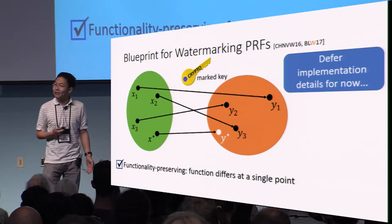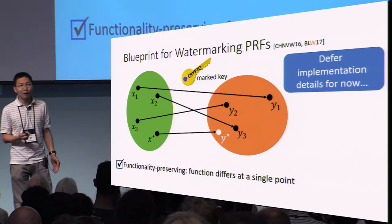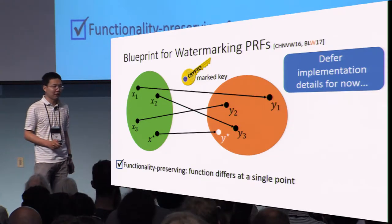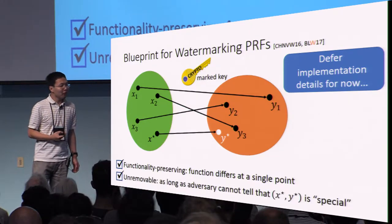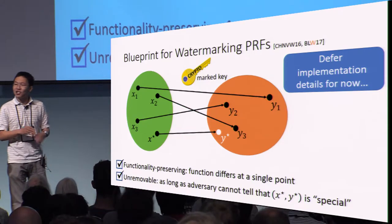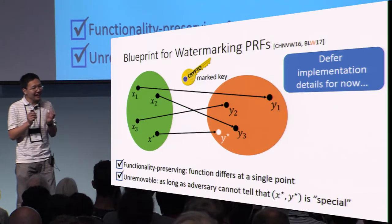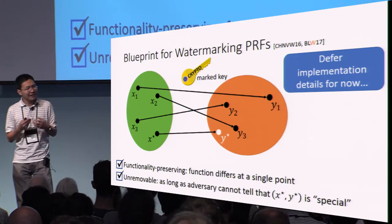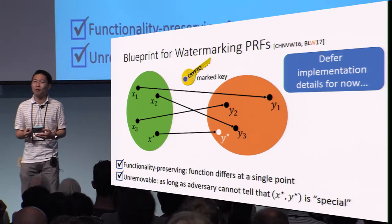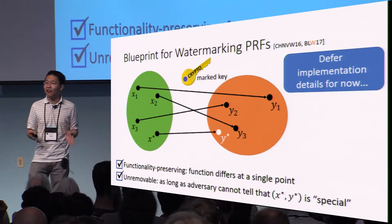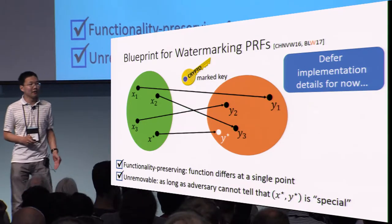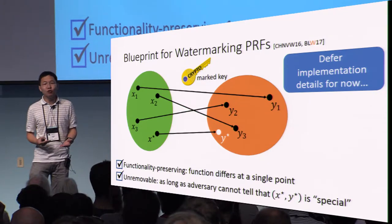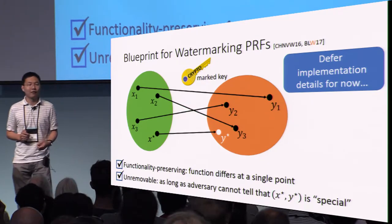It's very easy to see that this is functionality-preserving. The marked program differs from the original program on only a single point; everywhere else there is perfect agreement. And it's unremovable essentially as long as the adversary has no idea what point we punctured. As long as x* and y* are hidden from the adversary, the adversary has no hope of removing the watermark without corrupting a large swath of the domain of the pseudo-random function.